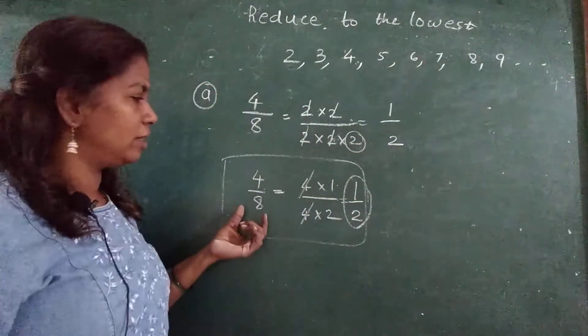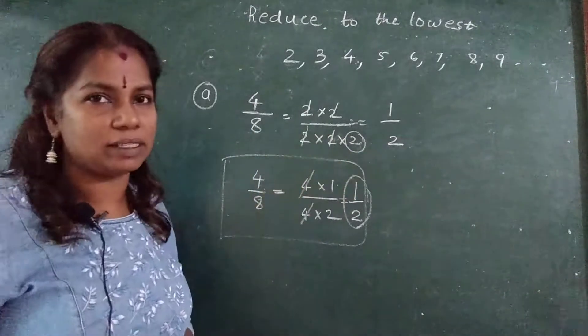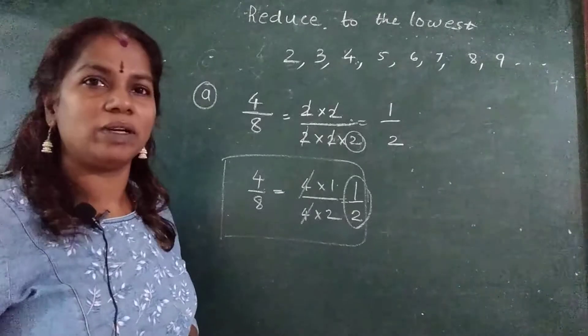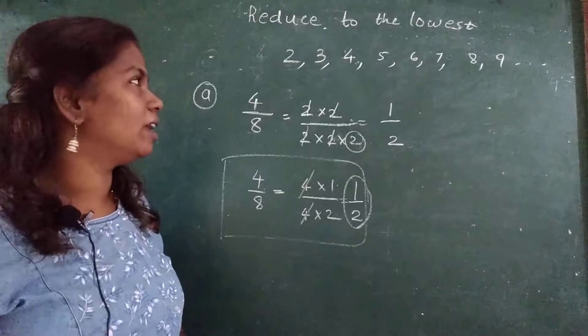2 methods. This method also, that method also. But answer is same. Math can be written in many methods. But you will get the same answer if your method is correct.